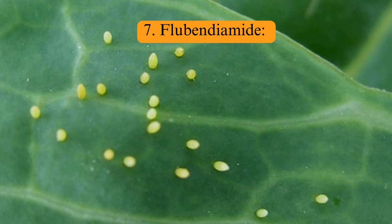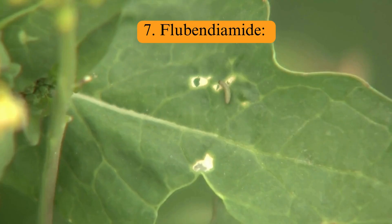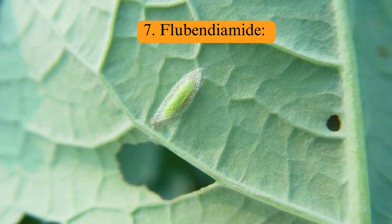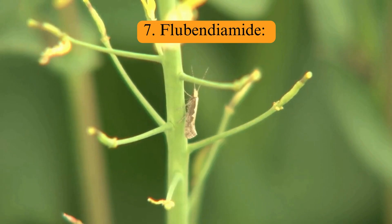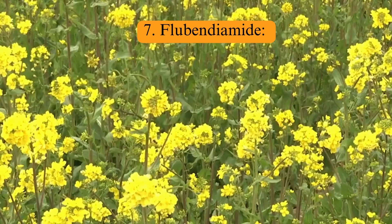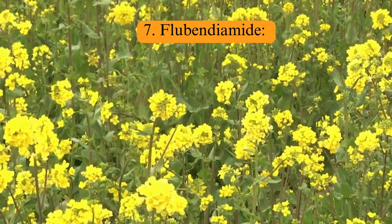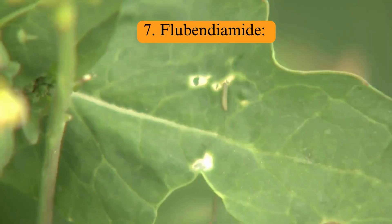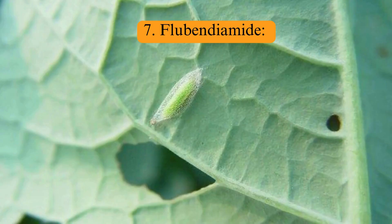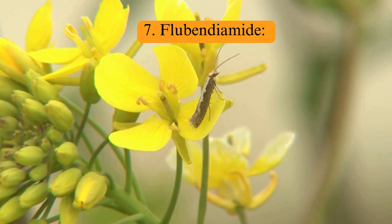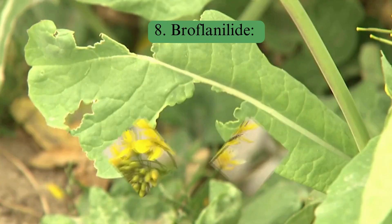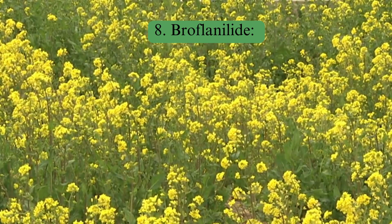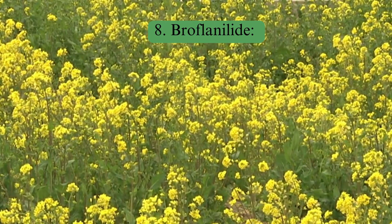Flubendiamide: Another diamide insecticide, flubendiamide targets ryanodine receptors, causing uncontrolled muscle contractions in insects. It is highly effective against lepidopteran pests, including the diamondback moth.